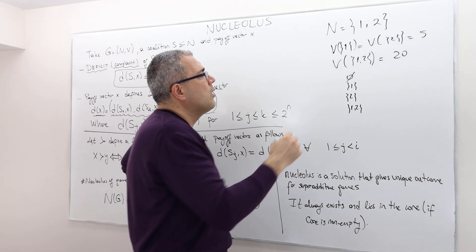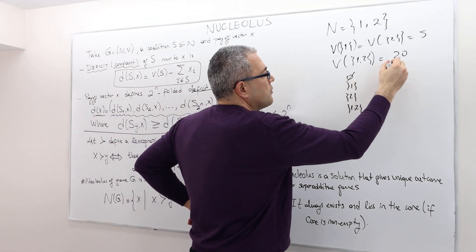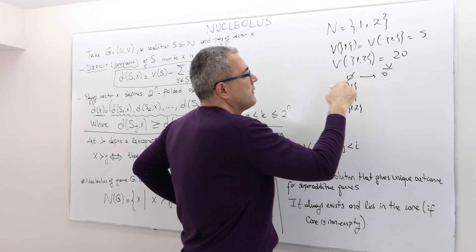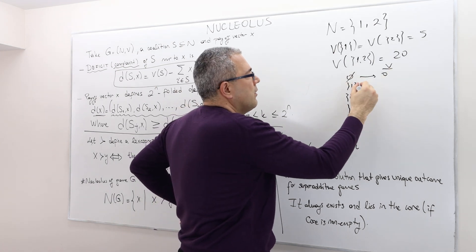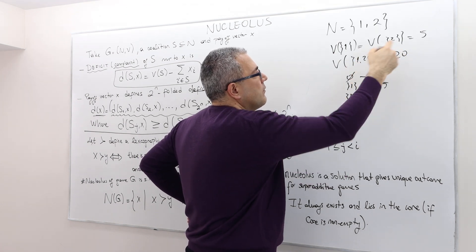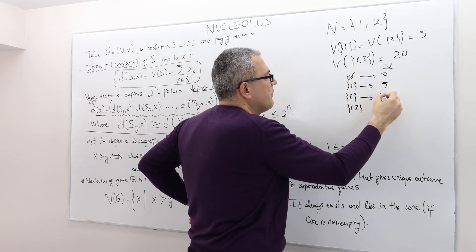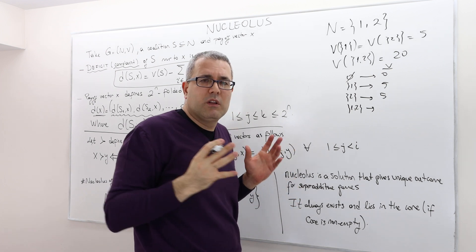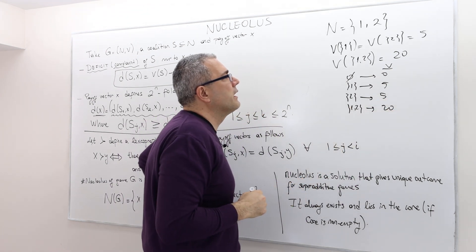There are four possible coalitions. So what is the worth of those coalitions? Empty coalition gets 0, coalition 1 gets 5, coalition 2 only, alone, 5, but the real coalition of two players gets 20.